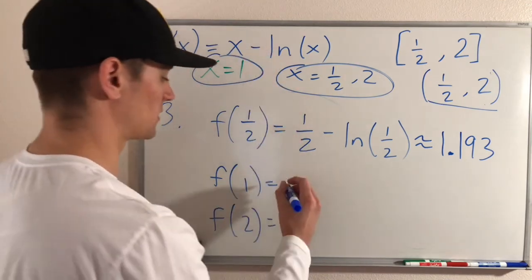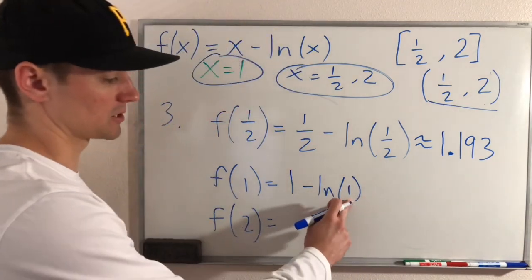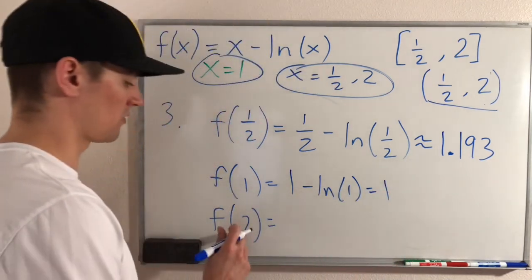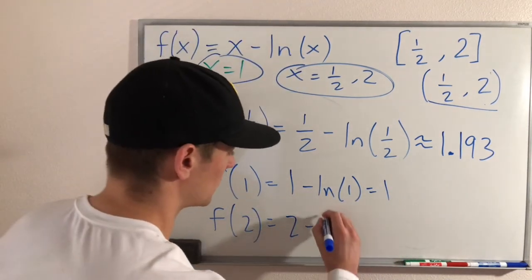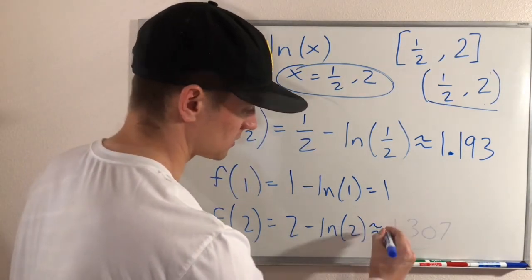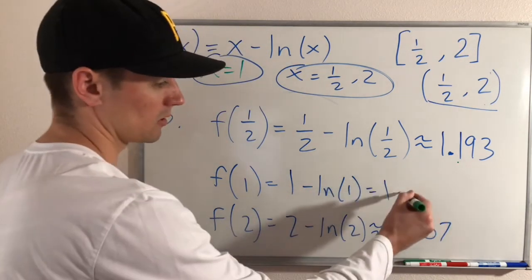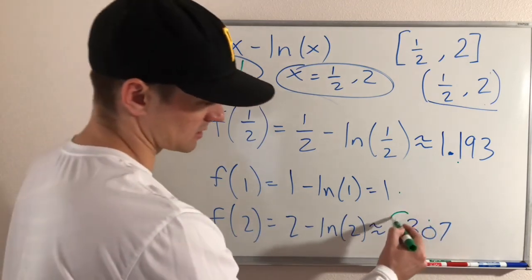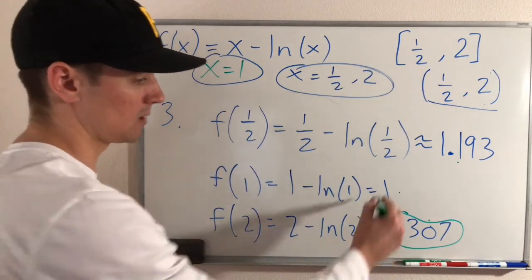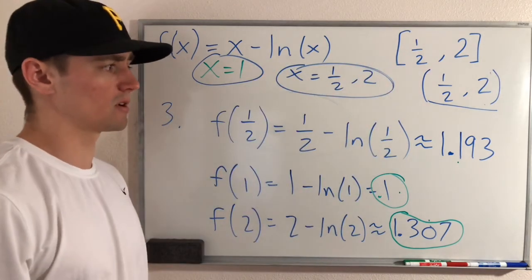For f of one, we replace x with one: one minus ln of one. ln of one is actually zero, so we just get one minus zero, which is one. For f of two, we get two minus ln of two, which plugging into a calculator gives about 1.307. So these are our possible maximum and minimum values. 1.307 is the biggest, so that is our absolute maximum. One is the smallest, so that is our absolute minimum on this closed interval.